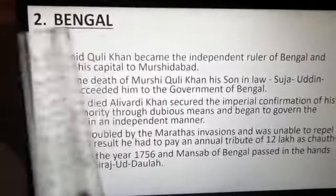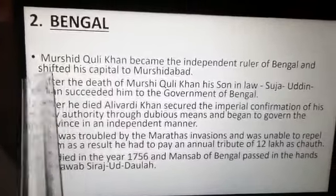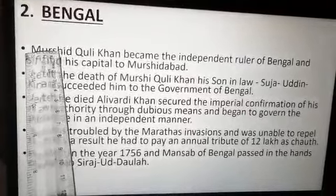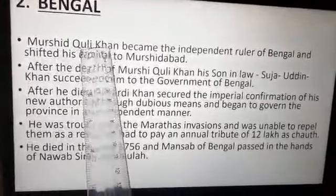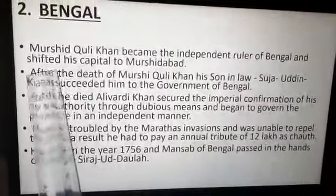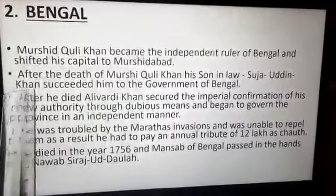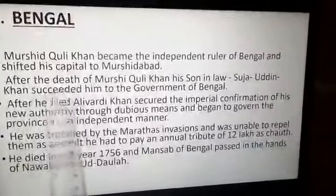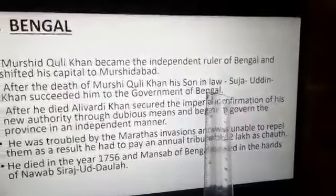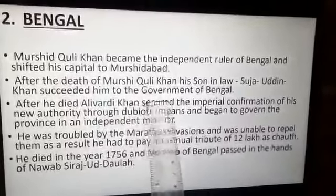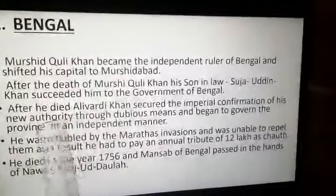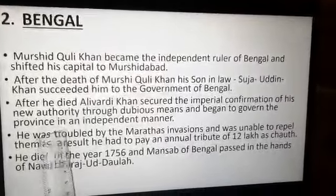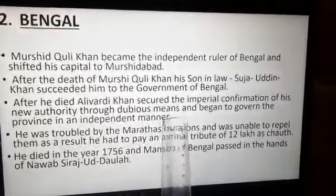Now let us discuss Bengal. Farrukhsiyar appointed Murshid Quli Khan as the governor of Bengal. Murshid Quli Khan became an independent ruler of Bengal and shifted his capital to Murshidabad. After his death, his son-in-law Shuja ud-Din Khan succeeded him. After Shuja ud-Din died, Ali Verdi Khan secured imperial confirmation of his authority through dubious means and began to govern the province in an independent manner.